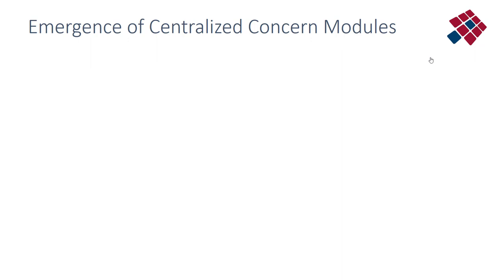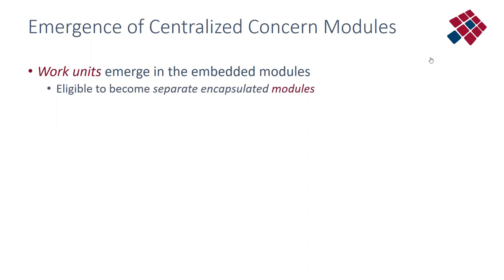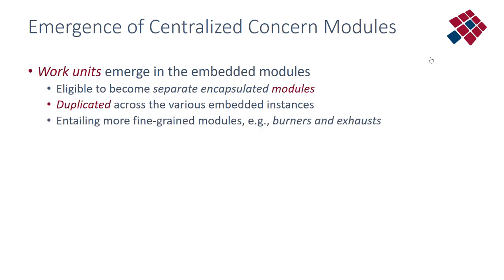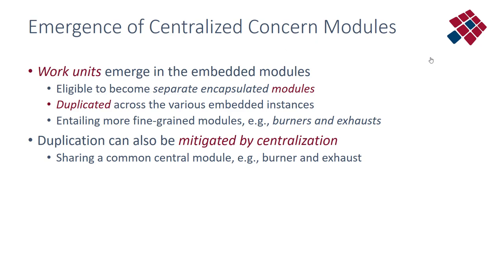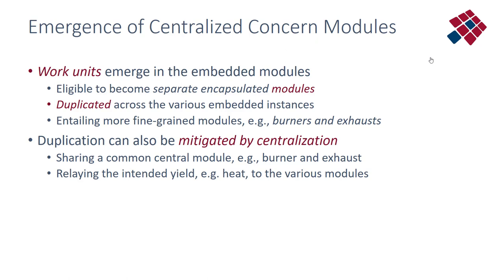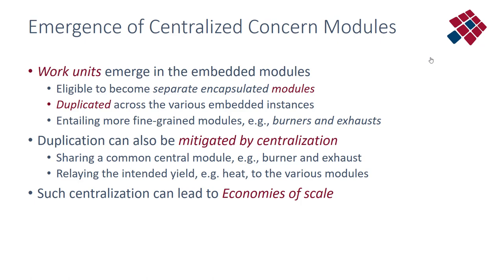After a while we get the emergence of centralized concern modules, because work units emerge in the embedded modules for heating, cooling, and music, and they become eligible to become separate encapsulated modules duplicated across various embedded instances. Duplication can also be mitigated by centralization. Instead of heating in every room, you could have more centralized heating — share a common central module like the burner and exhaust — and relay the intended yield, the heat, to the various modules being the rooms. Such centralizations can lead to economies of scale, because you could produce the heat or cooling in a more centralized, more productive way.